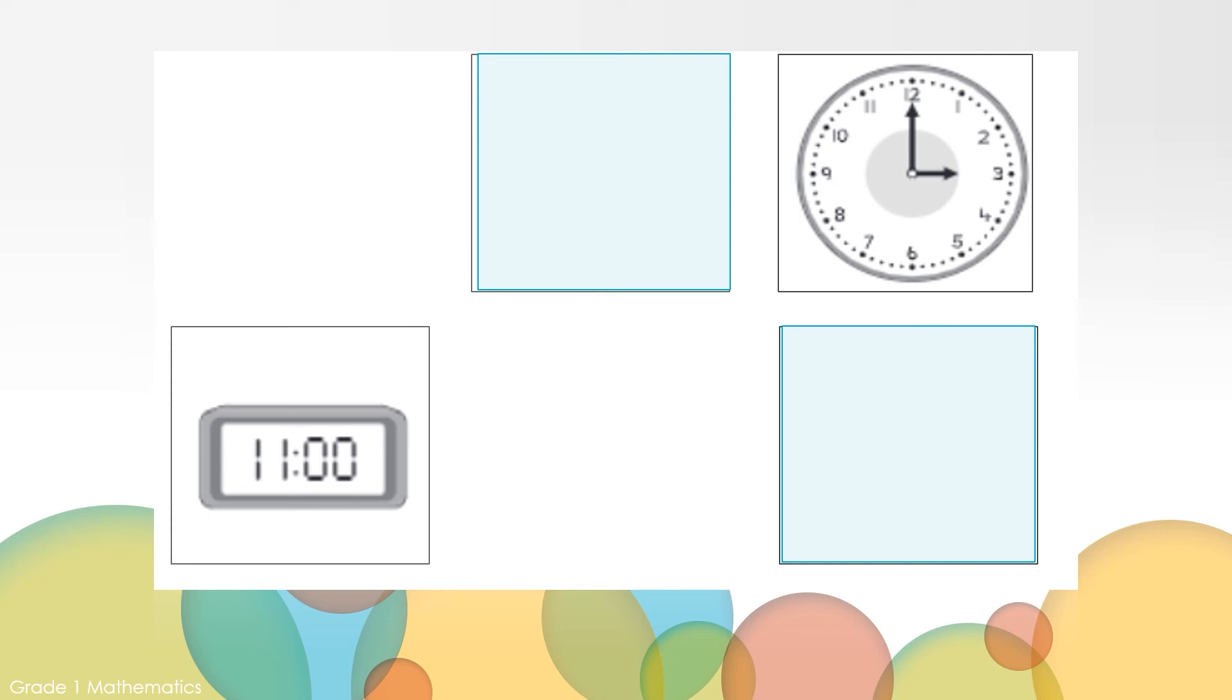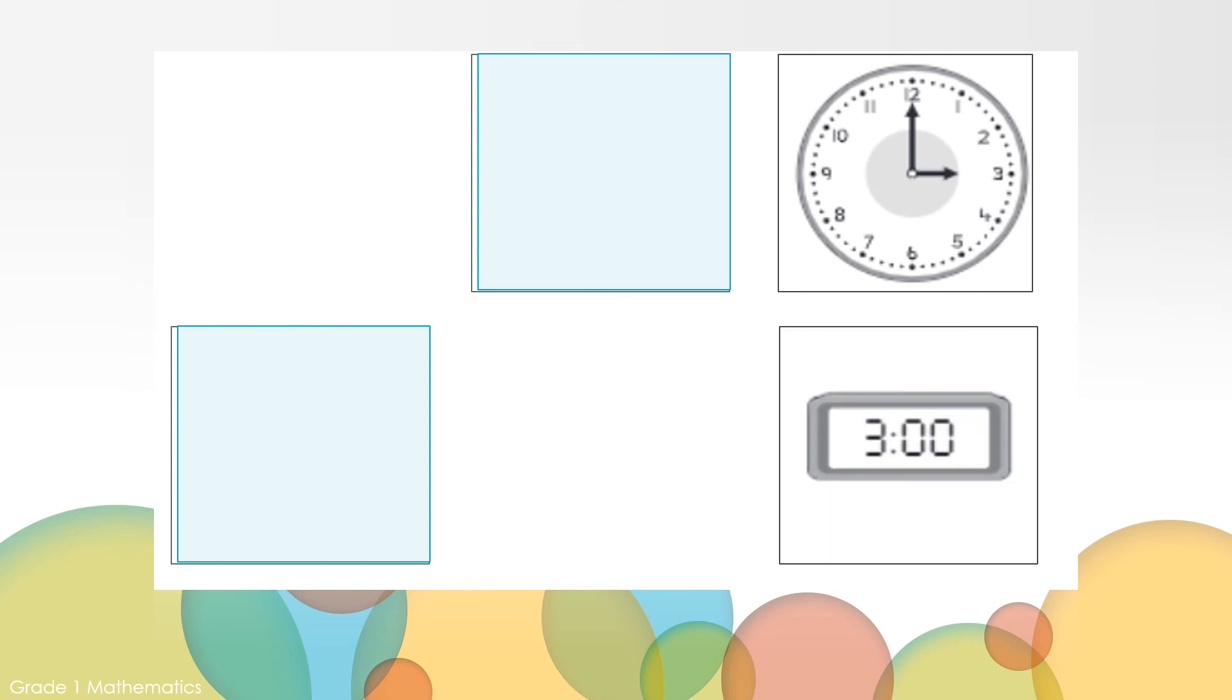Let's try to make some other matches. Which one should I turn over next? Let's see what's behind this card. This card says eleven o'clock. What time is shown on this card? The minute hand is on the twelve, which means it is an o'clock time. And the hour hand is pointing to the three. This clock shows three o'clock. Do these two cards match? No, they do not match. But I think I do remember where the other three o'clock card is. Let's see if we can find the three o'clock match. Do you remember where the other three o'clock card is? That's right. This digital clock shows three o'clock also. We made another match.